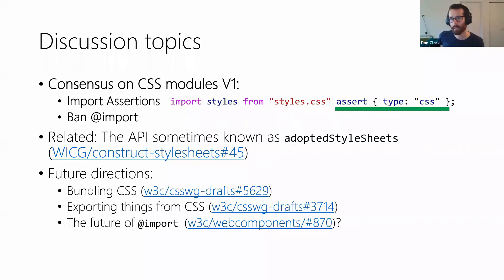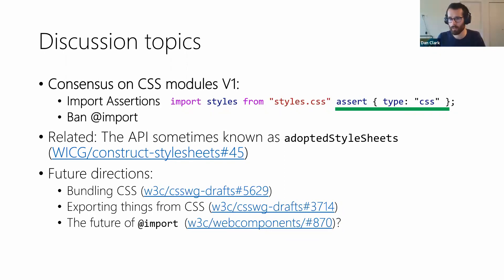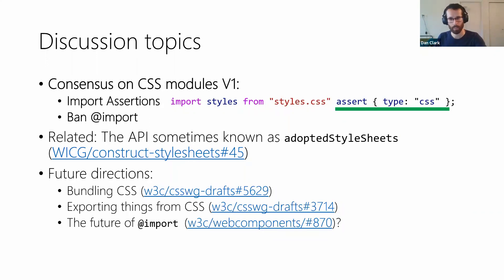So with that context set, I think we could move into discussion. The thing to start with might just be: is there a consensus on this CSS modules v1 with import assertions and with no @imports? Are implementers interested in building this? Are there objections? And if we can get somewhere on that, we could dig into this topic that got punted on Monday — adopted style sheets — because there are some issues to resolve around that API, and that's pretty closely related to CSS modules.